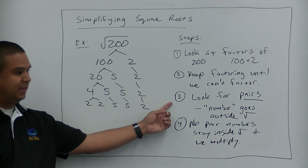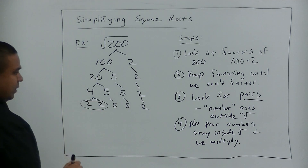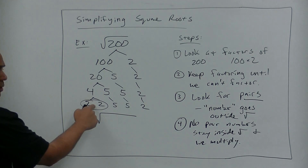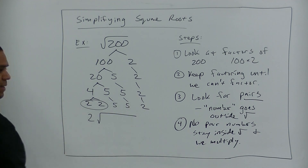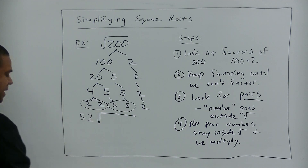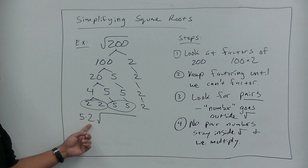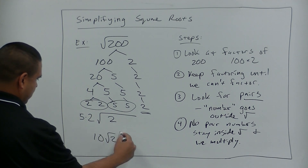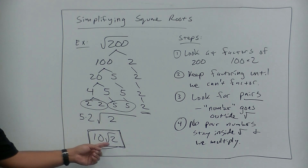So now we look for pairs. We have a pair of 2s, so 2 goes outside the square root. Any other pairs? A pair of 5s — so 5 goes outside. These are a pair of 5s so we write 5 outside; these are a pair of 2s so we write 2 outside. What's left over? 2. So this becomes 10 square root of 2. The square root of 200 simplifies to 10 times the square root of 2.